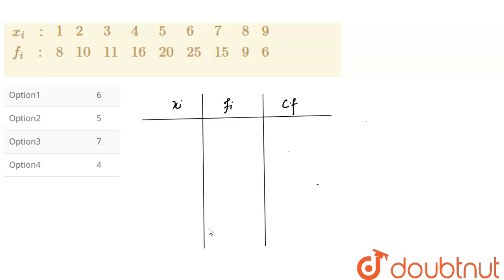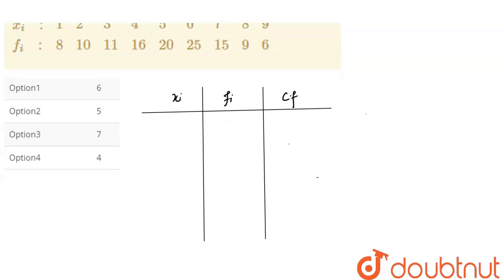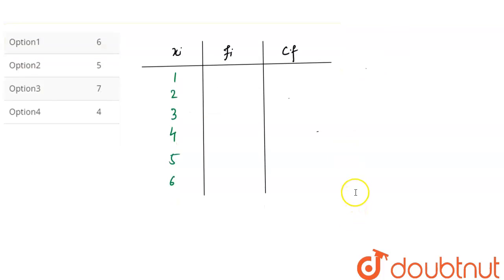Then we will find the sum of fi. So let's do it. Let's start our calculation. So here let's fill out the table. Here we have 1, 2, 3, 4, 5, 6, and here we have 7, 8, and 9.